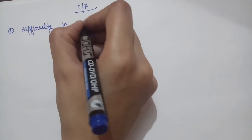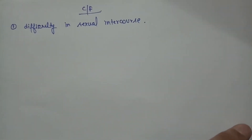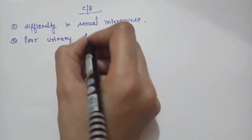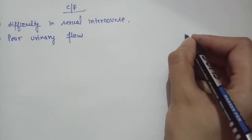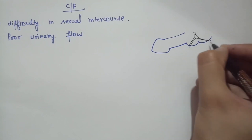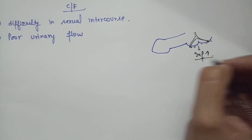The clinical features include: difficulty or inability in sexual intercourse, poor urinary flow, and in the perineal type where the urethra opens into the scrotum, urine wets the scrotum, increasing the chances of infection, dermatitis, and producing an abnormal urinary stream.